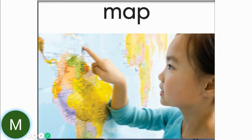A map can show you the states of the United States. It can show you the city and how to get somewhere by using the streets. It can show you different things in the city, such as different buildings and all that. They have all different kinds of maps.